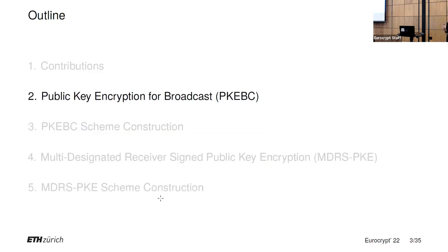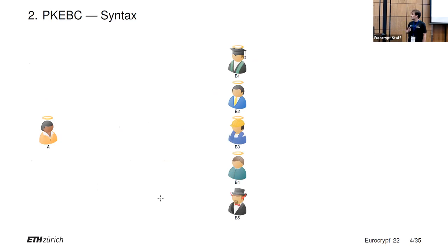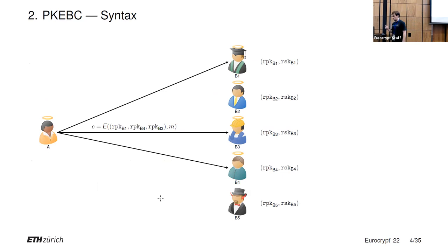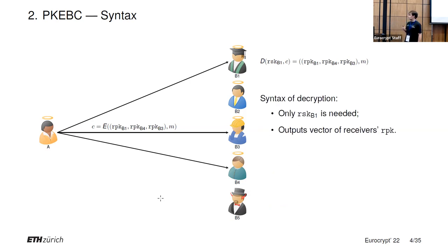Let's look at the syntax for PKE-BC schemes. Suppose you have a sender Alice and five receivers B1 through B5 with these public keys — RPK means receiver public key, and similarly for RSK. If Alice wants to send a message to, say, a vector of receivers B1, B4, and B3, she just encrypts it using this vector of public keys and the message. Then to decrypt, B1 will just use his own secret key and he will get back not only the message but also the vector of public keys with respect to which the ciphertext was encrypted.